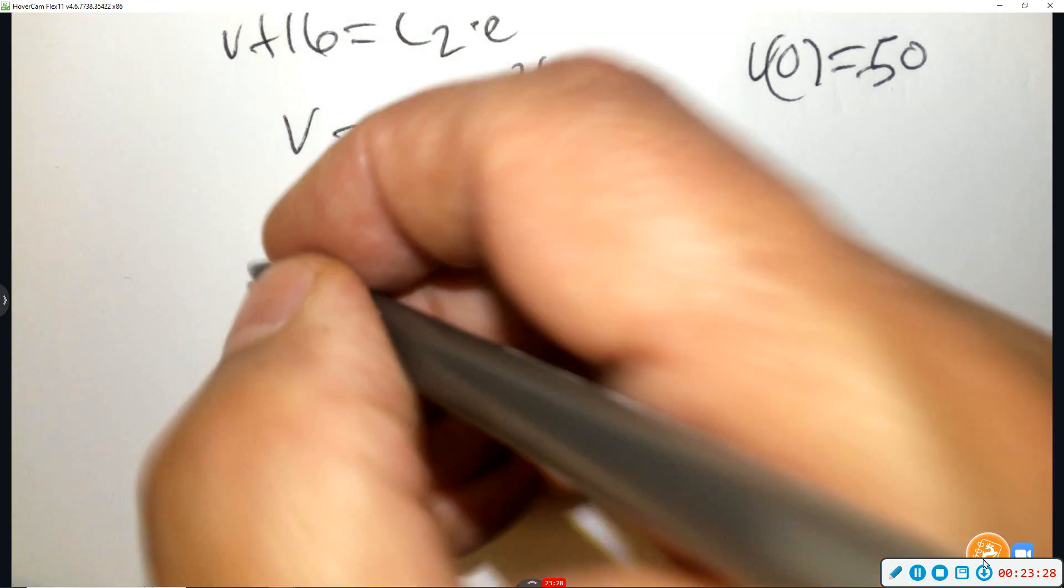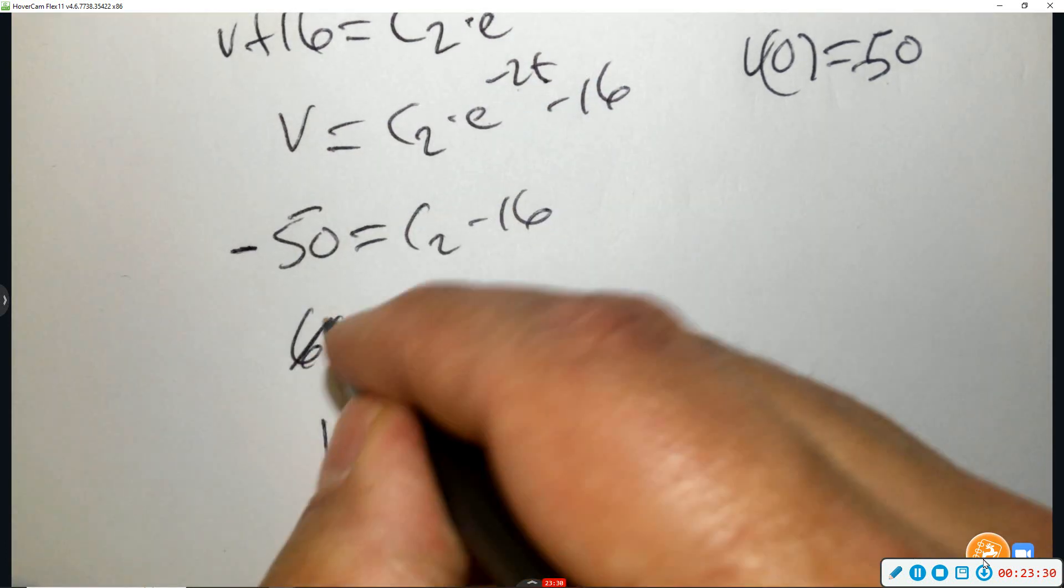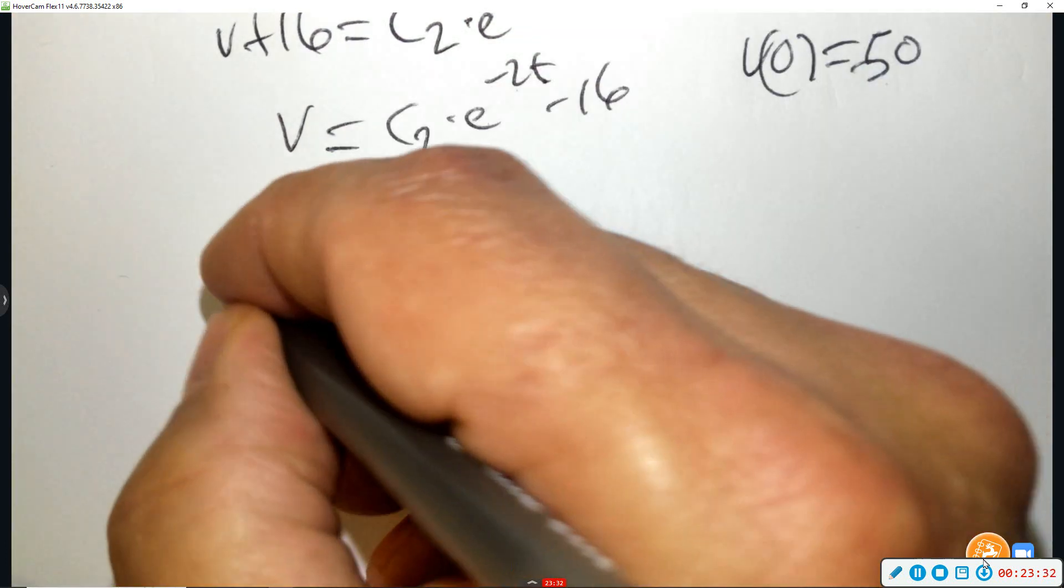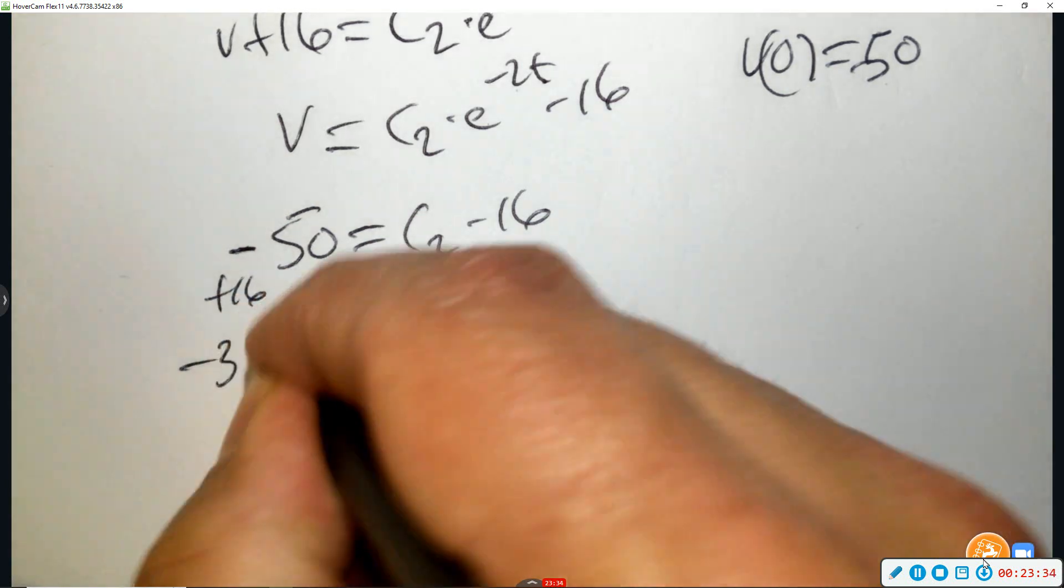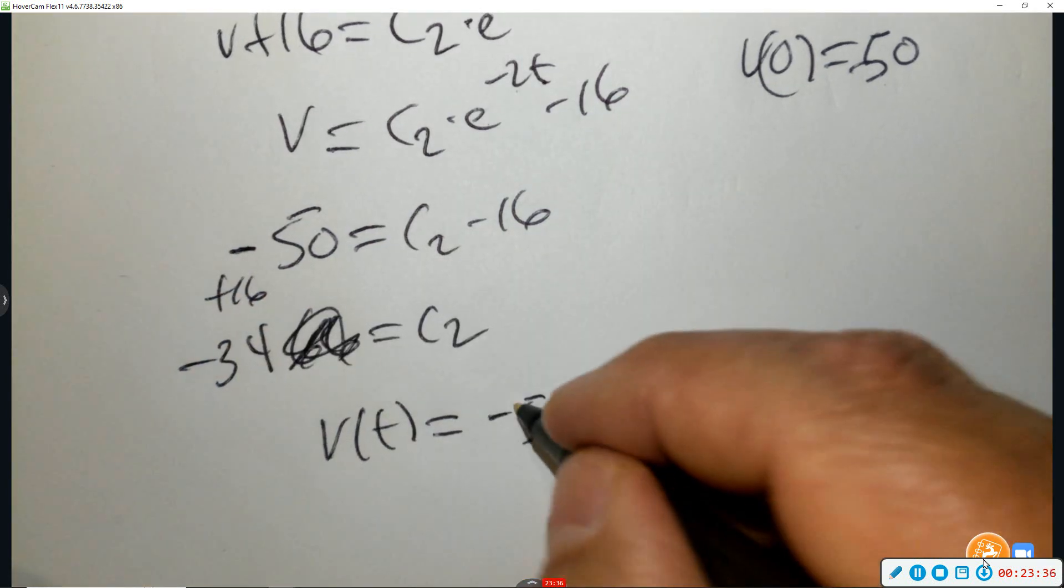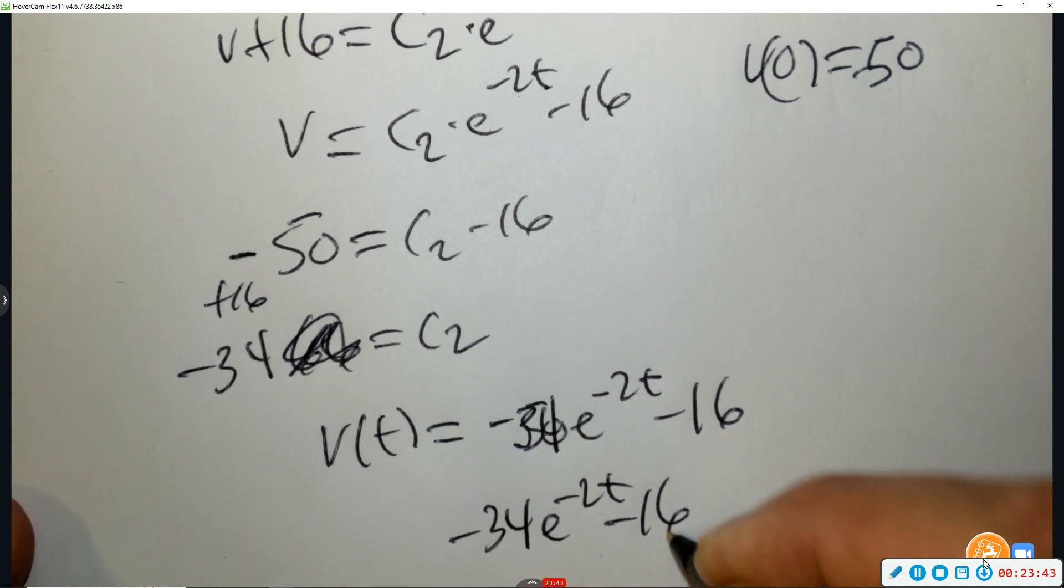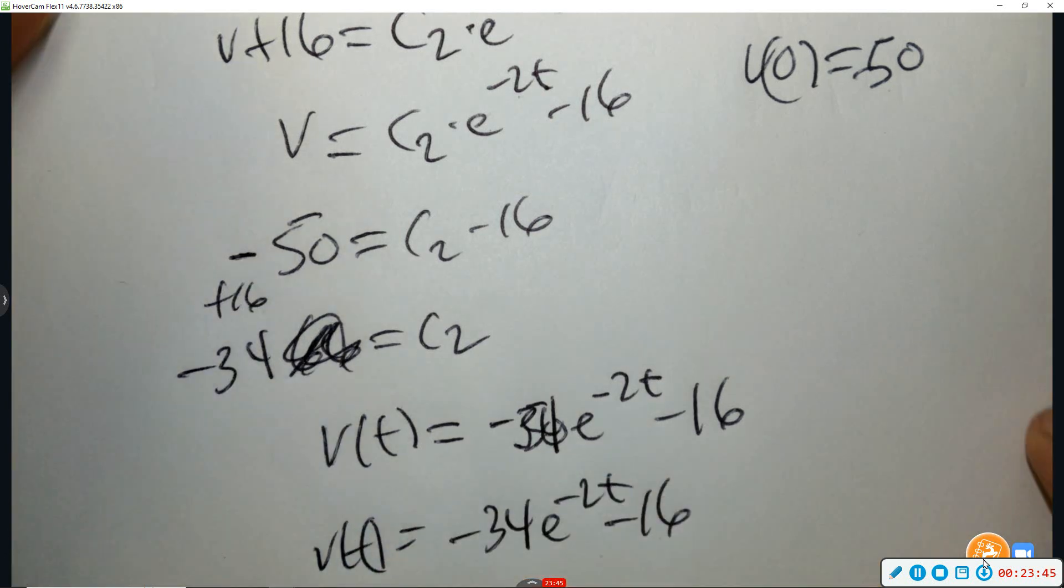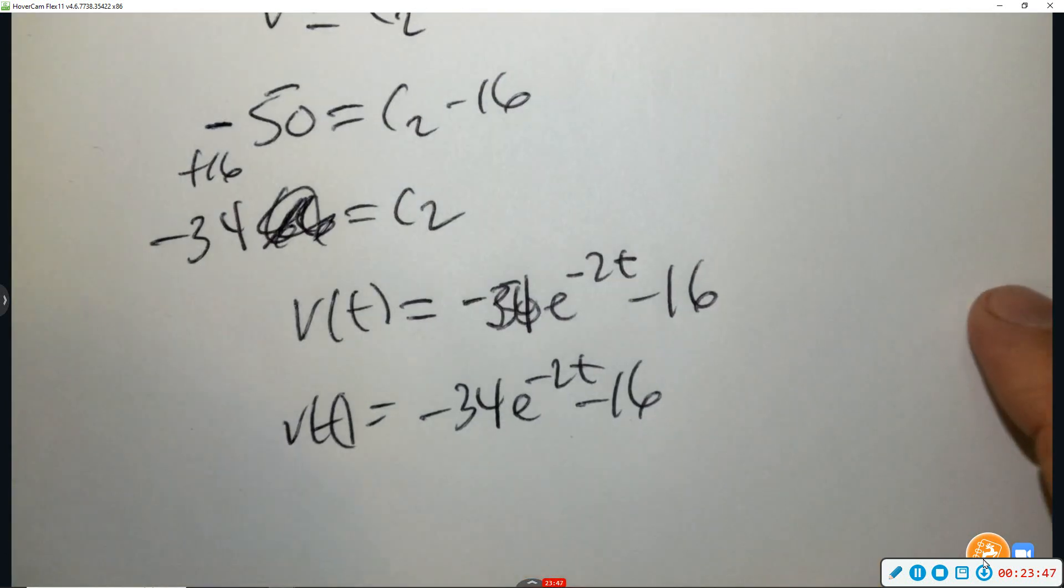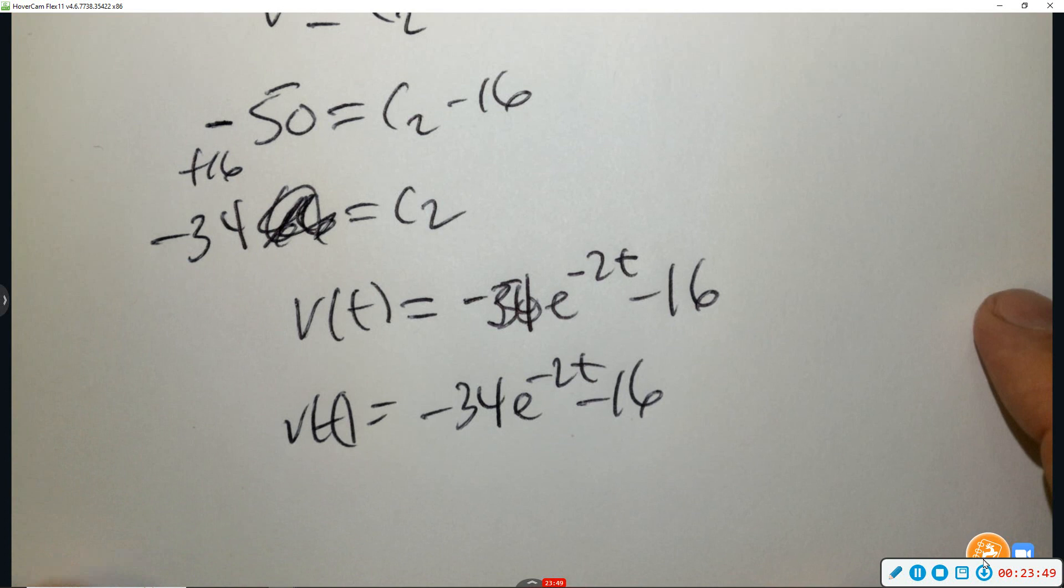Wait a second. Yeah, sorry, it's negative 50. So if you add 16, it'd be negative 34. This number is negative 34 minus 16. There it is. There it is. All right.